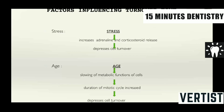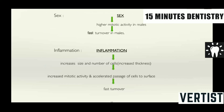There are some factors which influence the turnover time. Stress increases adrenaline and corticosteroid release, which depresses cell turnover. And as age advances, there is a decrease in the metabolic functions of the cells — they become slow, the duration of the mitotic cycle increases, and this depresses cell turnover. But as far as gender is concerned, high mitotic activity is seen in males — that is, faster turnover in males. Also, pathological conditions and physiologic inflammation increase the turnover rate of the cells.